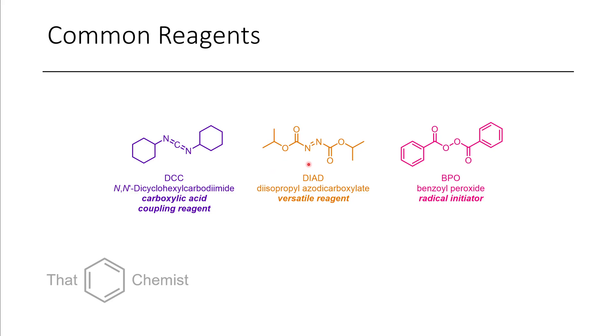This reagent here is called DIAD. It's a versatile reagent. It's quite often used in a reaction called the Mitsunobu reaction, although it has other chemical purposes. So it's a good one to be familiar with. The third and final one for today is BPO, benzoyl peroxide. When you heat this up to high temperatures, this oxygen-oxygen bond splits and it generates a radical on each one. So you can use that for radical initiations, and you can also use it for various oxidation reactions as needed.